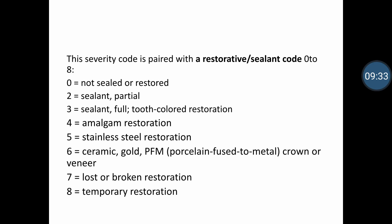The second number in ICDAS denotes the status of the restoration or sealant. Code 0 means the tooth is not sealed or restored. Code 1 is sealant partial. Code 2 is sealant or tooth-colored restoration. Code 3 is sealant to tooth-colored restoration. Code 4 is amalgam restoration. Code 5 is stainless steel restoration. Code 6 is ceramic, gold, or PFM crown or veneer. Code 7 means the restoration is lost or broken. Code 8 means there is a temporary restoration. This is how ICDAS helps in assessing the severity of caries and status of restoration in the oral cavity.